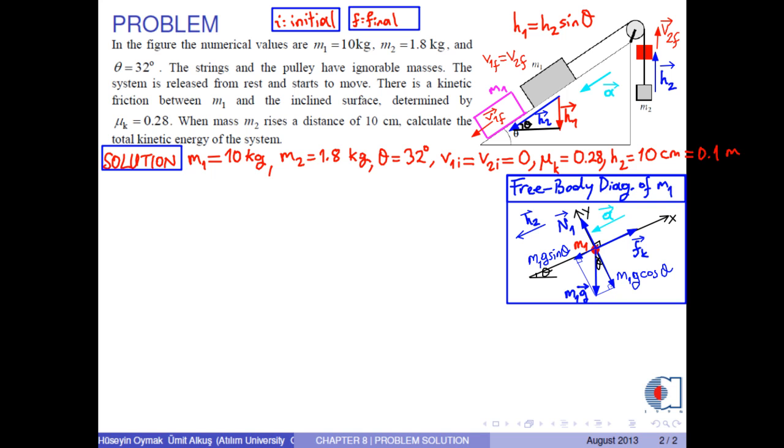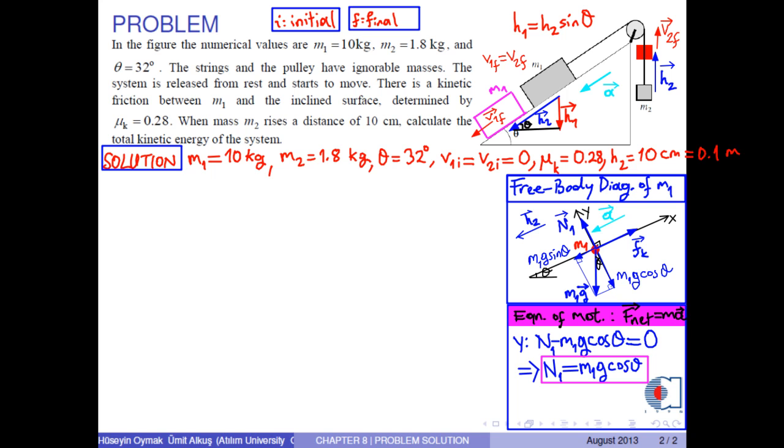Now, we can write the equation of motion by the help of Newton's second law F net equals m times a. Because there is no motion along the y axis, we have the net force on this axis as N minus m1 g cosine theta equal to 0. Therefore, the normal force becomes m1 g times cosine theta.